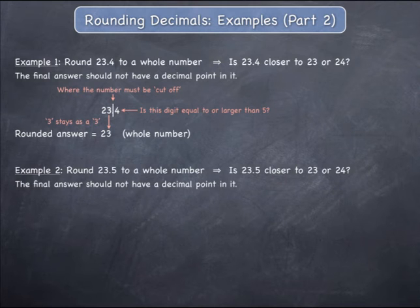In example 2, consider a slight alteration to the original question. Imagine that the original number is 23.5 that needs to be rounded to a whole number.